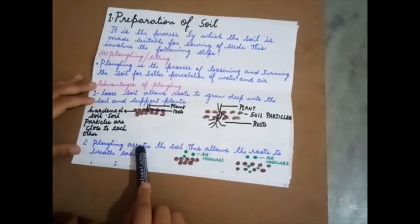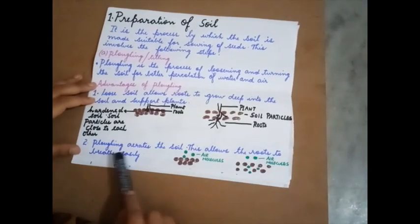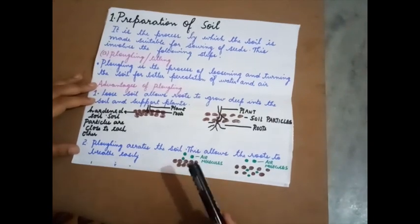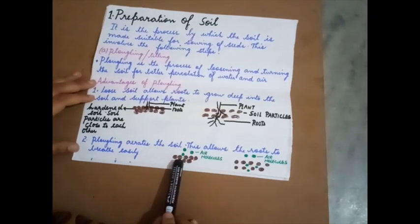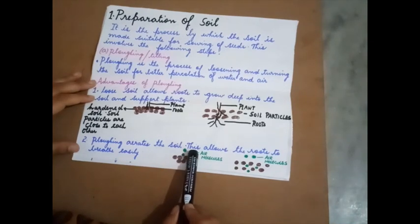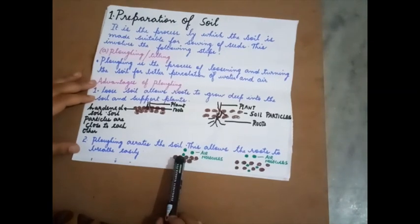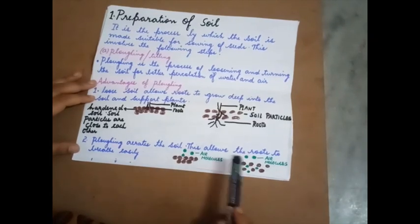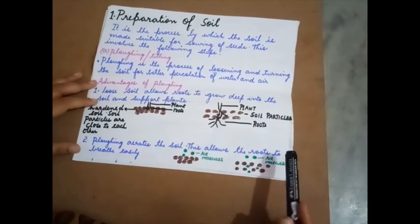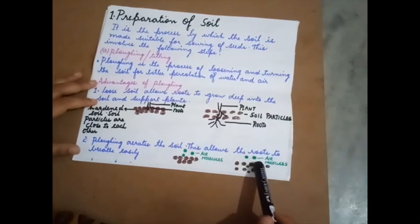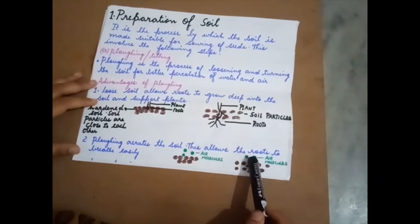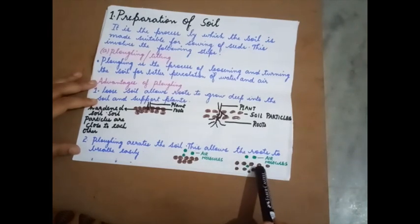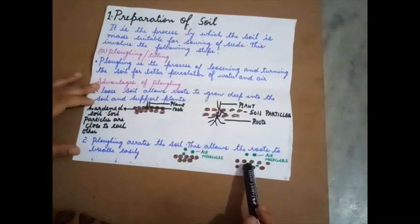Plowing also aerates the soil, which allows the roots to breathe easily. In unplowed soil, air molecules cannot easily penetrate because the soil particles are closely adhered to each other. In plowed soil, air molecules can easily penetrate and circulate within the soil — this is known as aeration.